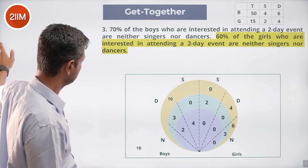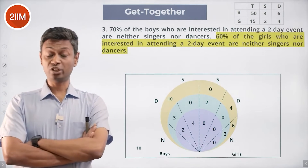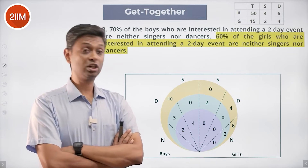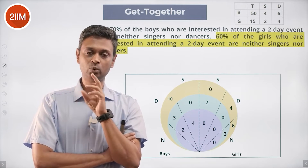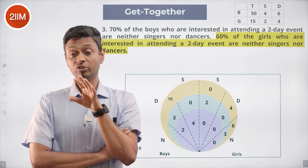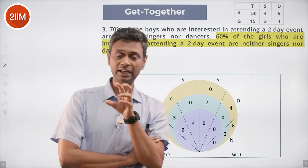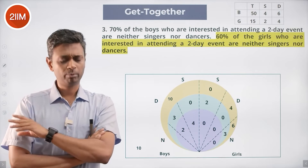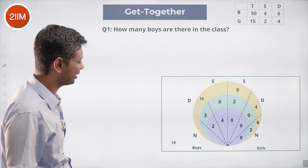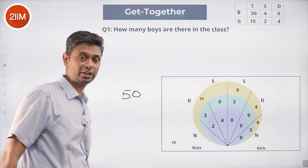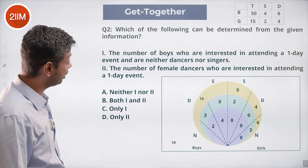Everything is filled — the entire grid is complete. This is a very interesting but properly challenging question. The difficulty comes from three overlapping classification structures: boys/girls, the nested one-day/two-day/three-day structure, and singers/dancers. By organizing it methodically, the solution becomes manageable. The first question — how many boys are in the class — is straightforward: 50. X must be a multiple of 50, 100 doesn't work, 50 works.